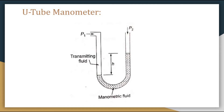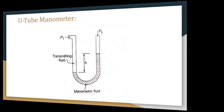An important point about the U-tube manometer: it has two pressures, p1 and p2. If p1 is the input pressure, then when p2 equals zero, it measures absolute pressure. If p2 equals atmospheric pressure, then p1 is used for measurement of gauge pressure. And if p2 is a second pressure, then p1 can be used for measurement of differential pressure. So we can use the U-tube manometer to measure three types of pressures by varying p2.